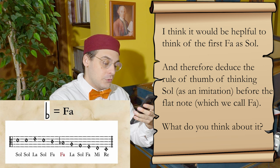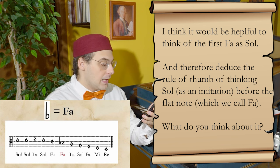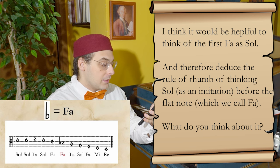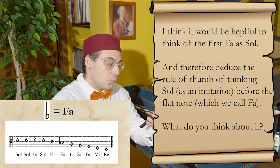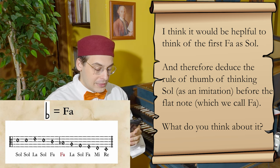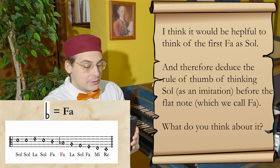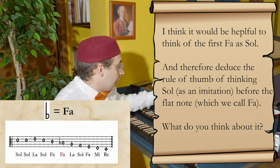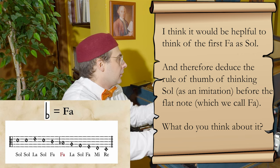Donatus suggests: 'I think it would be helpful to think of the first fa as sol, and therefore deduce the rule of thinking sol as an imitation before the flat note which we call fa. What do you think about it?'